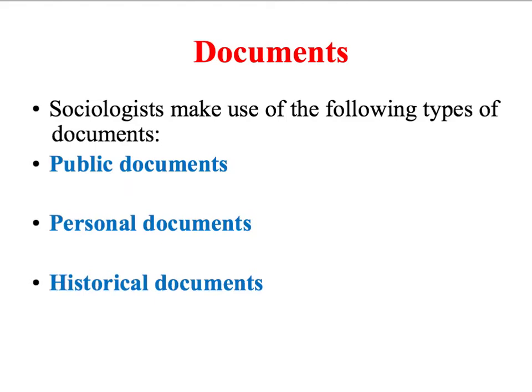Secondly, sociologists might want to use personal documents, sometimes also referred to as life documents. These are produced by individuals and include items such as letters, diaries, photo albums, and autobiographies. These are first-person accounts of social events and personal experiences that often include the writer's feelings and attitudes. Finally, historical documents is simply the term used to describe personal or public documents that were created in the past.